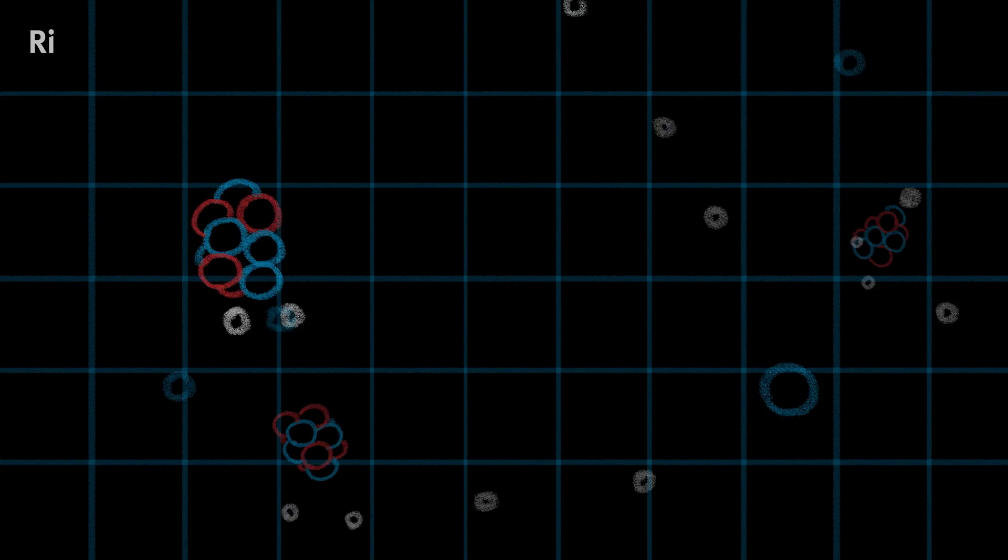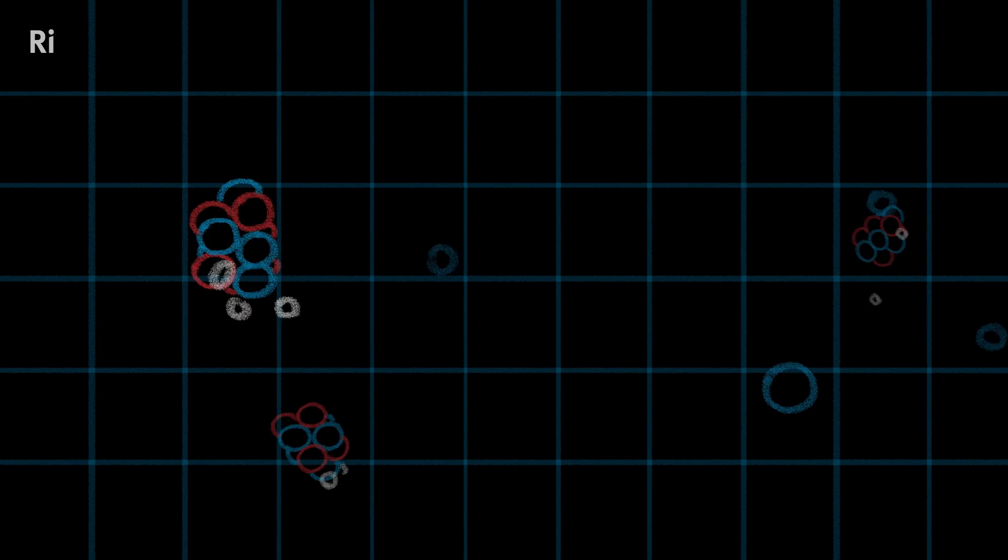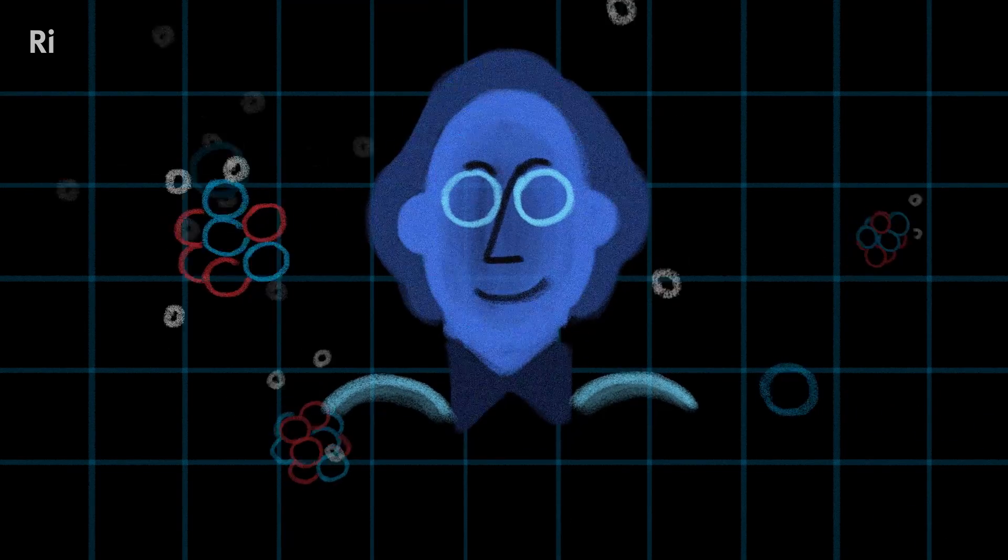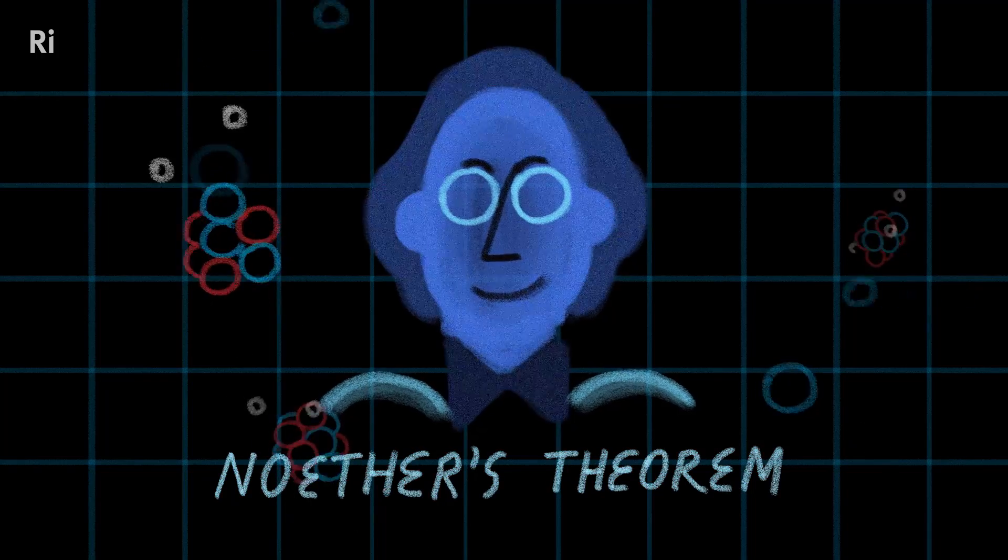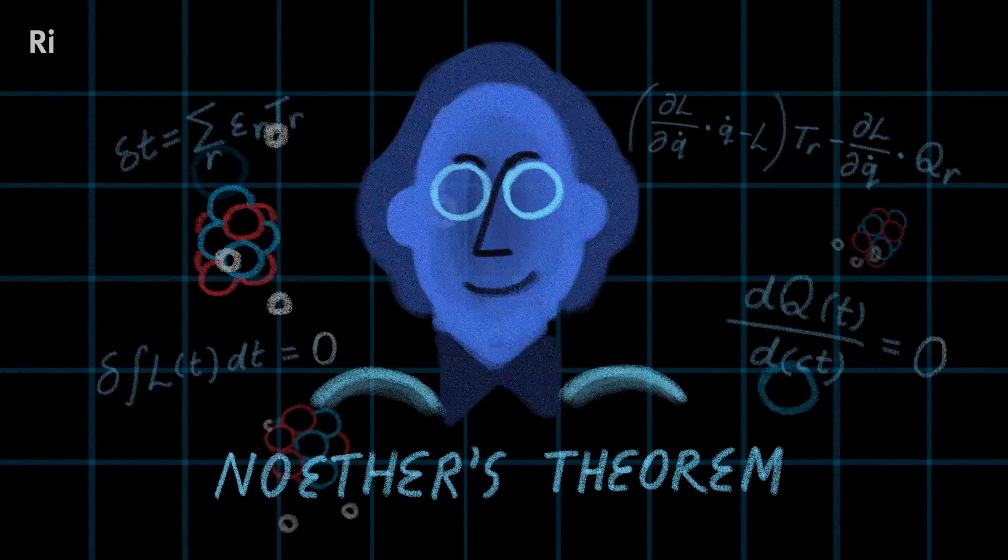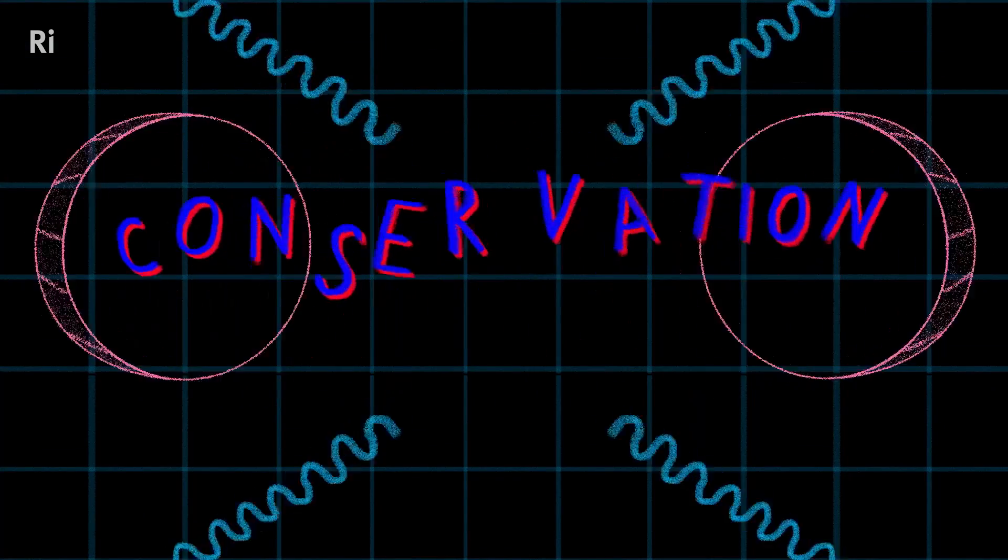This relationship between symmetry and the mechanics of the universe was something Emmy Noether proved in 1915 with her remarkable theorem linking maths and physics in one harmonious statement. Wherever there is a symmetry of nature there's a corresponding conservation law.